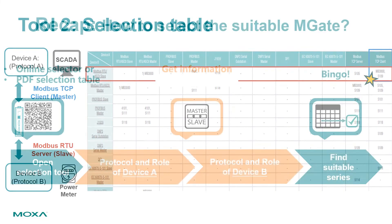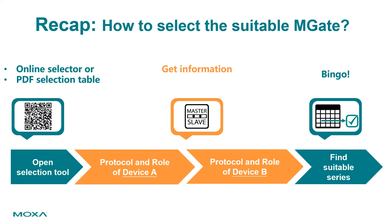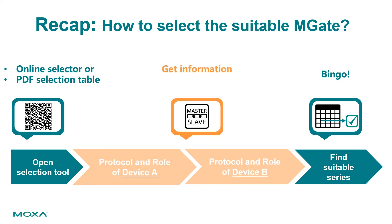Okay great, thanks very much. So you can either use the online selector or the PDF selection table. That's right. You just need to add in your requirements such as the protocols and the roles of the devices on both sides to find the suitable M-Gate series.